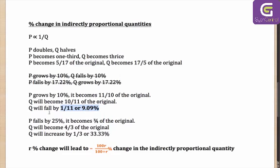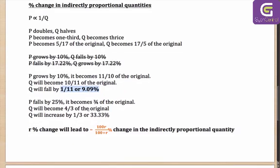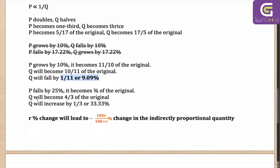As you can see, Q is not falling by 10%. Let me take another example to clarify this idea. Let's say P falls by 25%, which means it becomes 3/4 of the original.